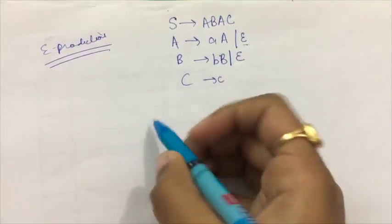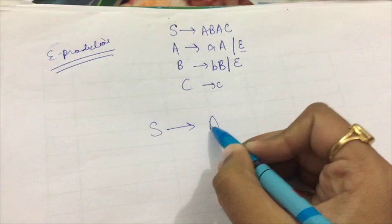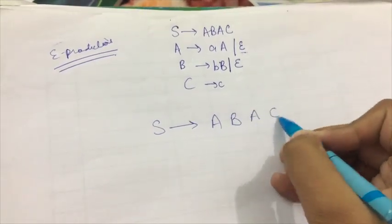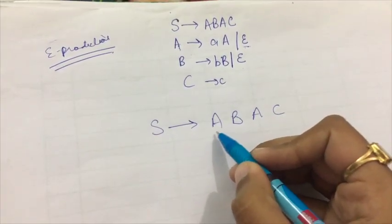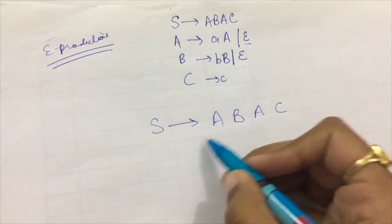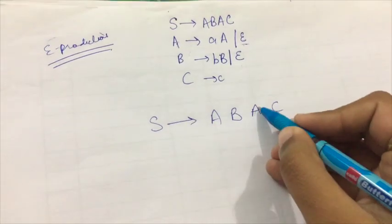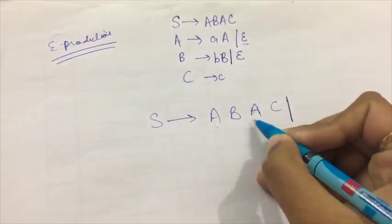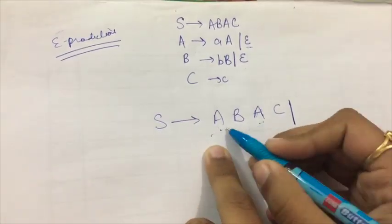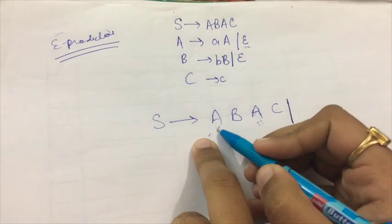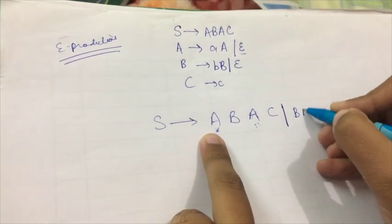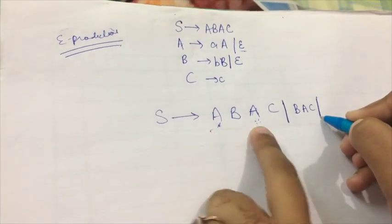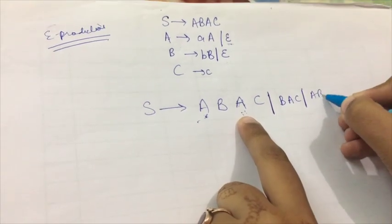Now here, please see very carefully. There are many possibilities. We can say that both the A's will not be null, or any one of the A's will be null. When any one of the A's will be null, suppose I take this A as null, so the production rule will become this one. When I take this A as null, the production rule will become this one.